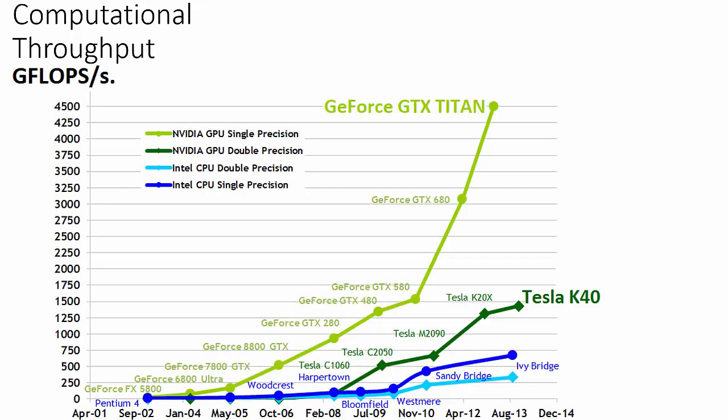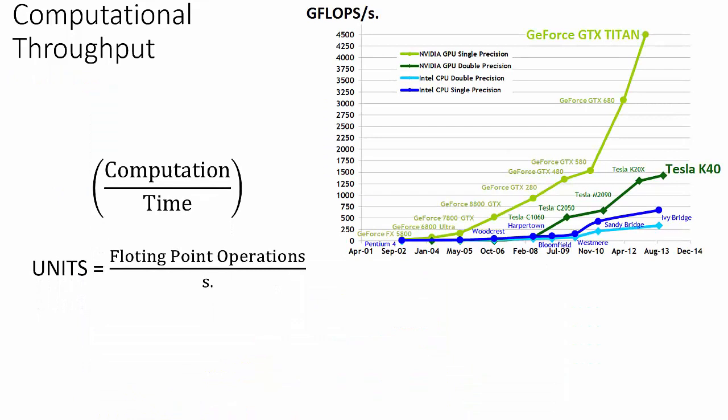Now we've already seen this graph in the first lecture, which illustrates the extreme computational throughput of NVIDIA GPUs. Computational throughput is measured in how many floating-point operations can be performed in a given amount of time. Both the GeForce Titan and the Tesla K40 use the Kepler GK110 GPU architecture.